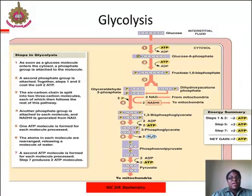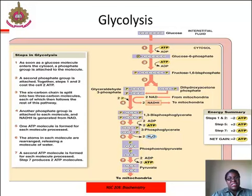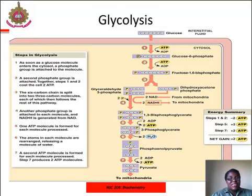Glycolysis could be defined as a sequence of oxidation reactions that convert glucose into pyruvate. Glycolysis reactions occur in the cytoplasm of the living cell. Each glucose molecule is split and converted to two three-carbon units, that is pyruvate. During this process, several carbon atoms are oxidized. Enzymes in the glucose metabolic pathway include kinase, phosphatase, isomerase, dehydrogenase, mutase, enolase, and synthase.